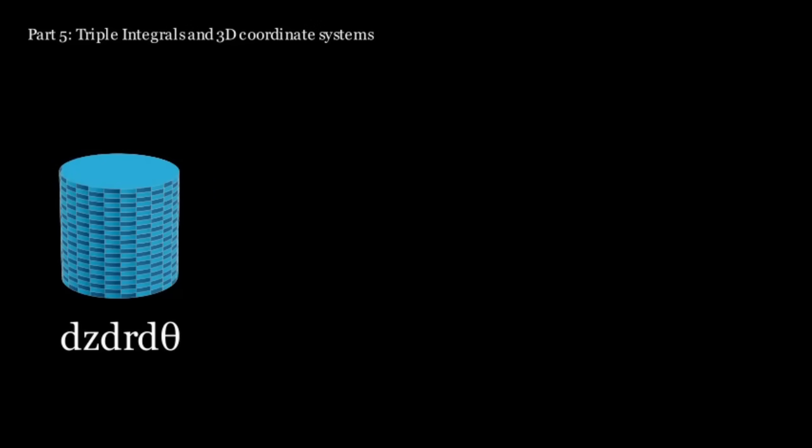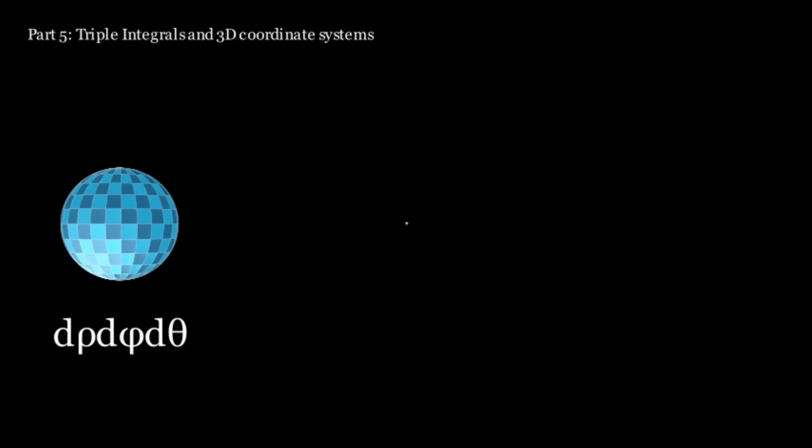In cylindrical coordinates, there is a radius r, a z coordinate, and an angle theta. In spherical coordinates, there is a radius and two angles. Rho is the 3D distance from the origin, phi is the angle from the vertical line which passes through the origin, and theta works just like in polar.